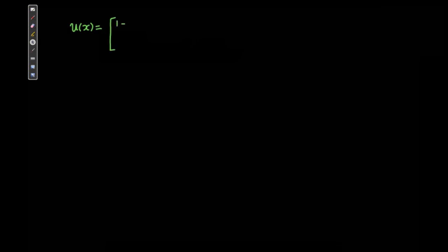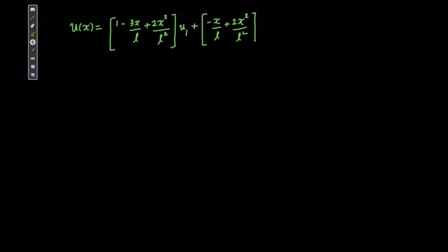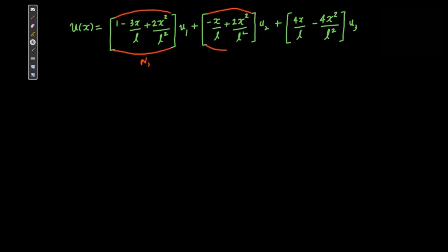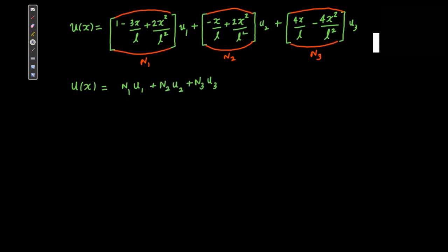Let us begin. I have already derived the shape functions of a quadratic bar element — I can give the link in the description below. Now, if you look at this equation, it gives the equation for displacement of your cantilever bar — the displacement at any point in the bar. If you look at this particular expression, it is of the form N1·U1 + N2·U2 + N3·U3, which you can write very nicely in that compact form.